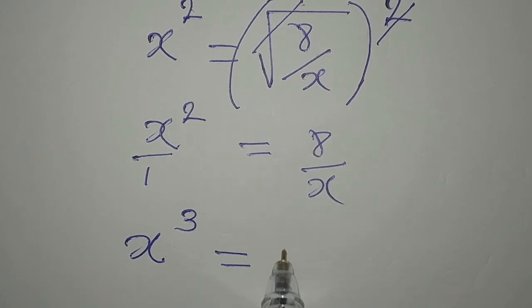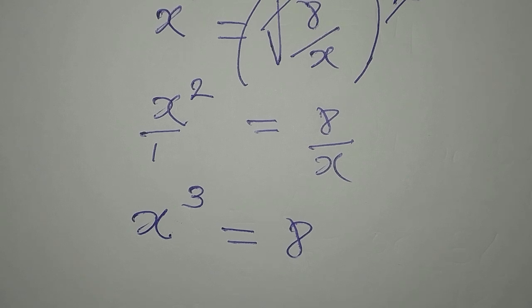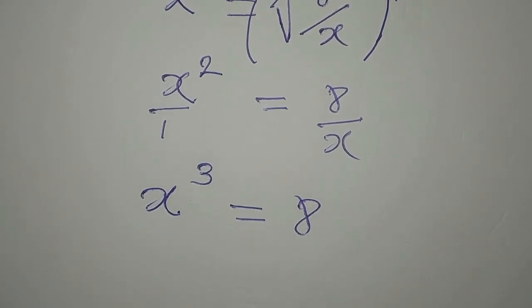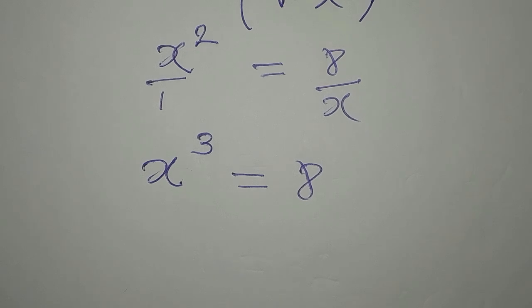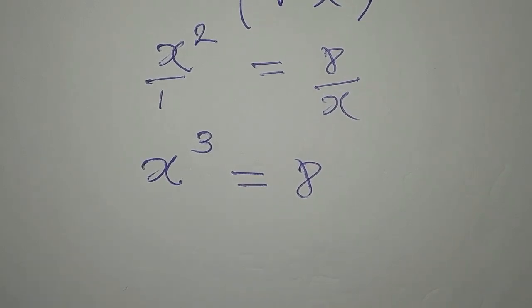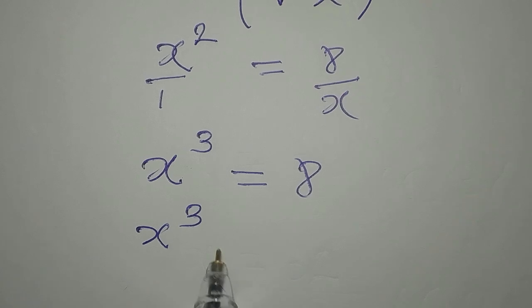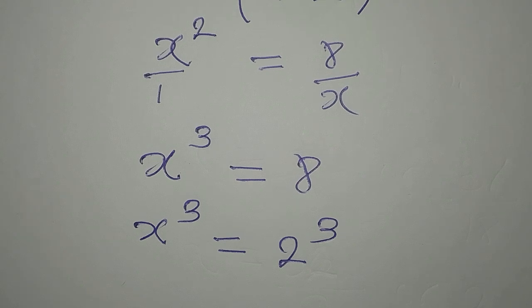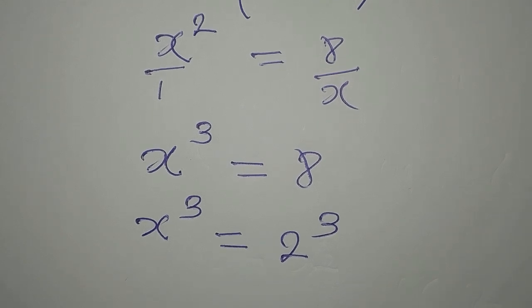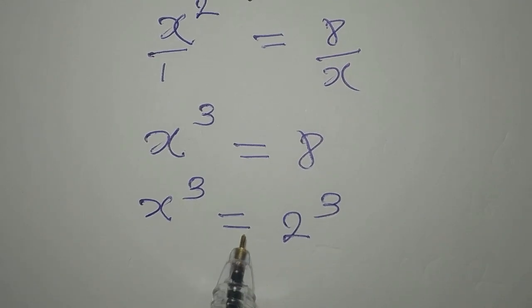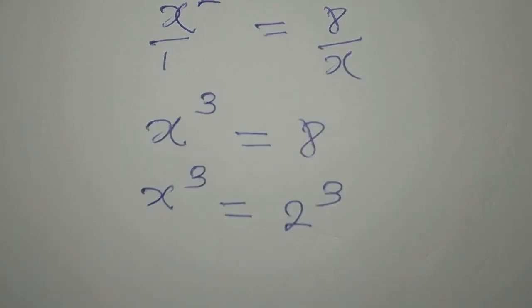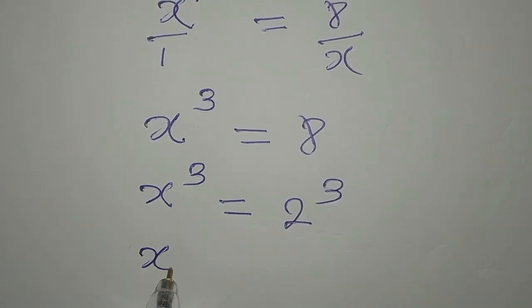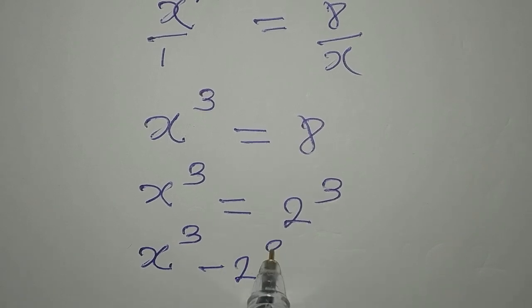x multiplied by x squared gives x to the power of 3, and that is equal to 8. From here we can solve this and have three solutions, because we have the power of 3. x to the power of 3 equals 2 to the power of 3. Ordinarily we could equate the bases and say x equals 2, but that won't give us all three solutions. Let's bring this to the left and apply difference of two cubes.